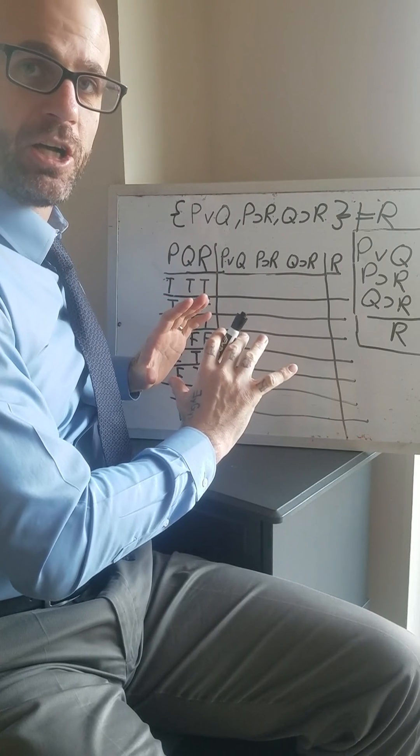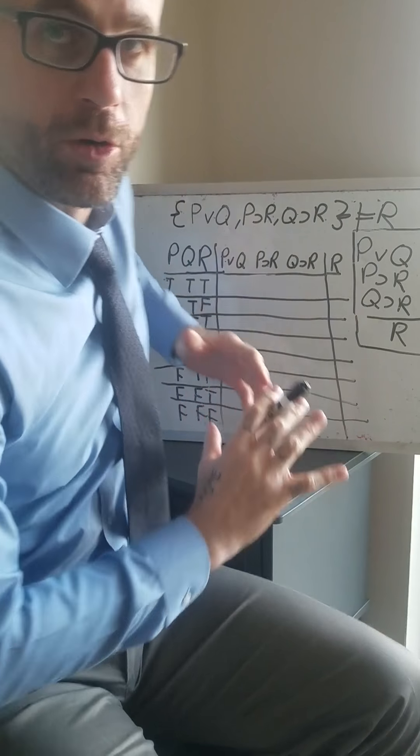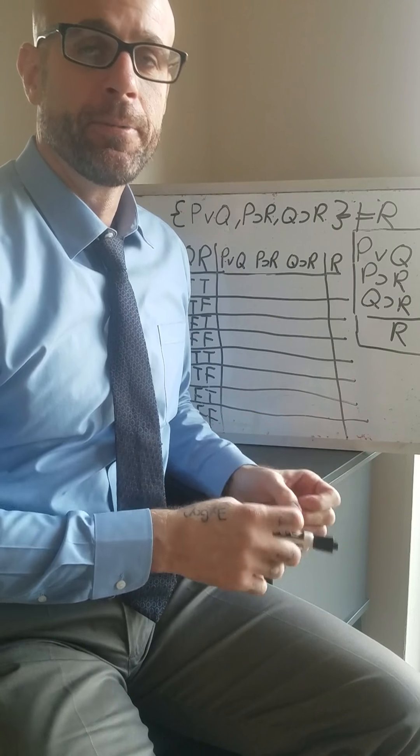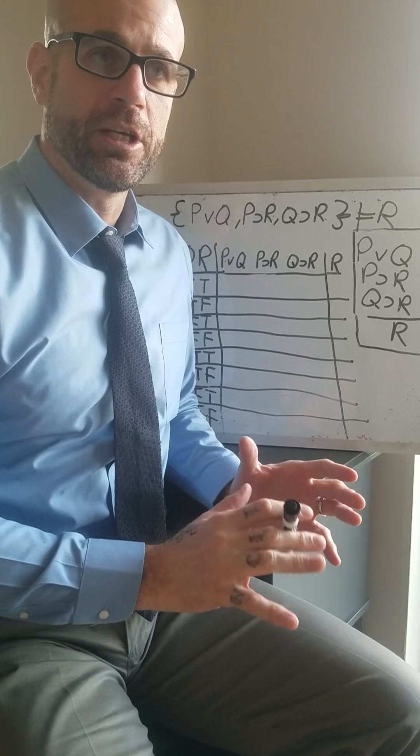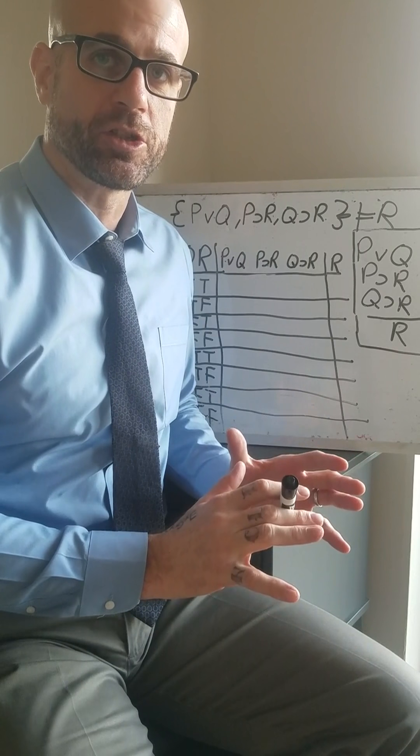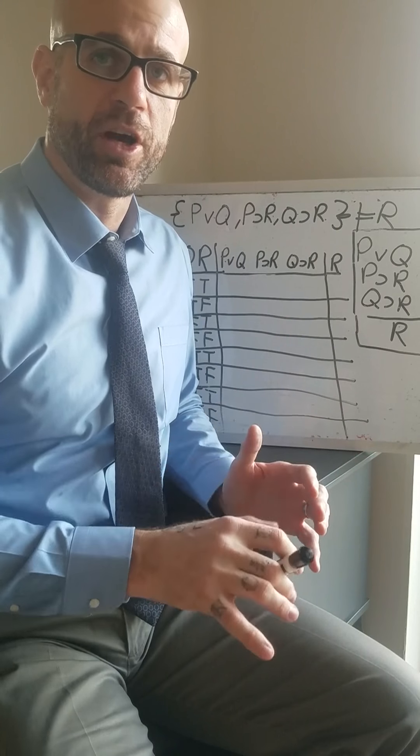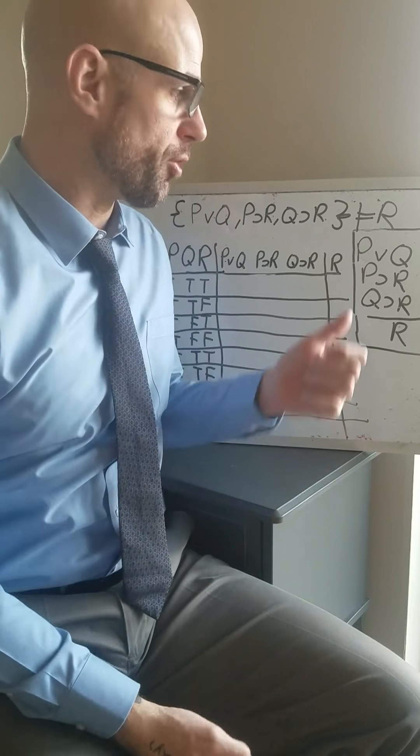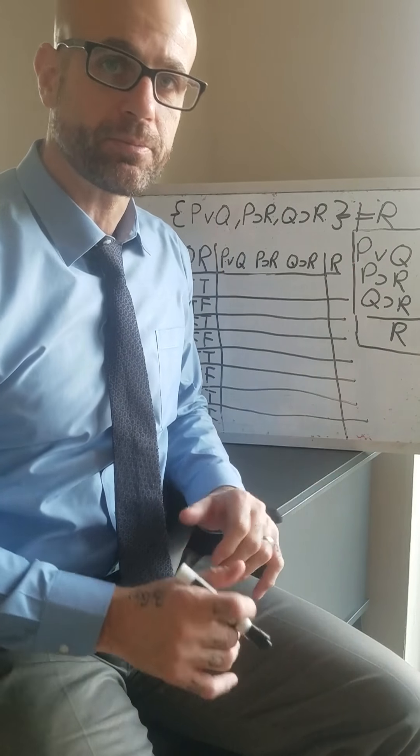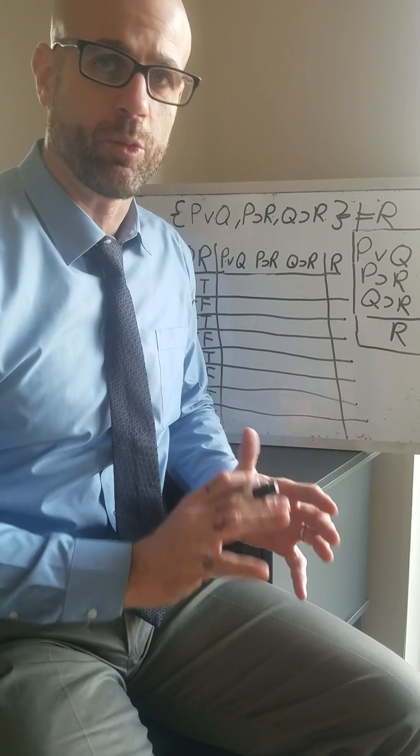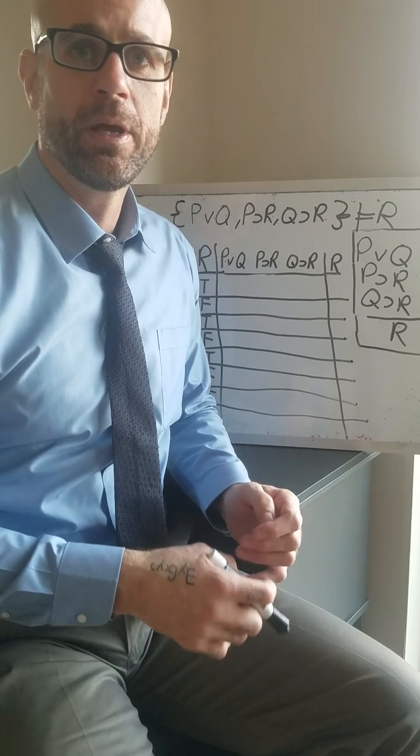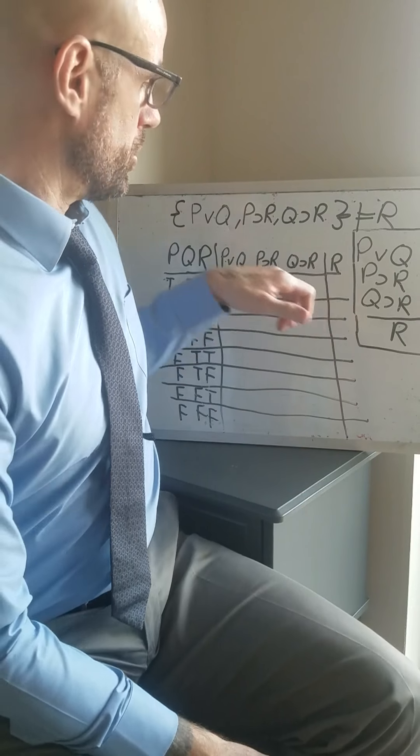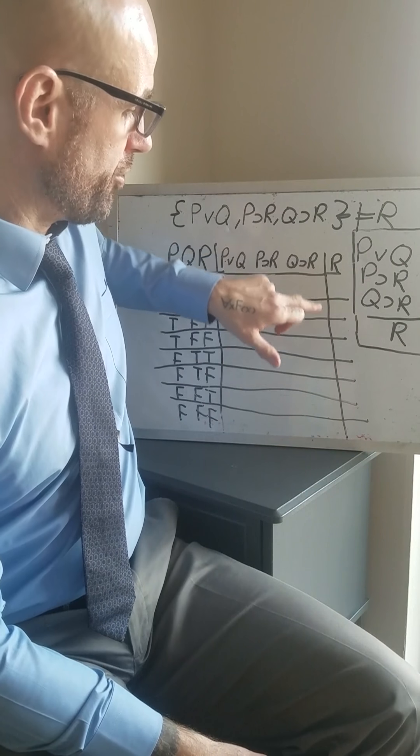So let's go ahead and look at how to evaluate this with a truth table. I think you'll find that this is a really easy concept because you already know how to do truth tables, and this is just a question of knowing what to check. So think of this as being like a hunt for a counter example. A counter example is a truth value assignment or a row on the truth table that's going to make all of our premises true and our conclusion false.